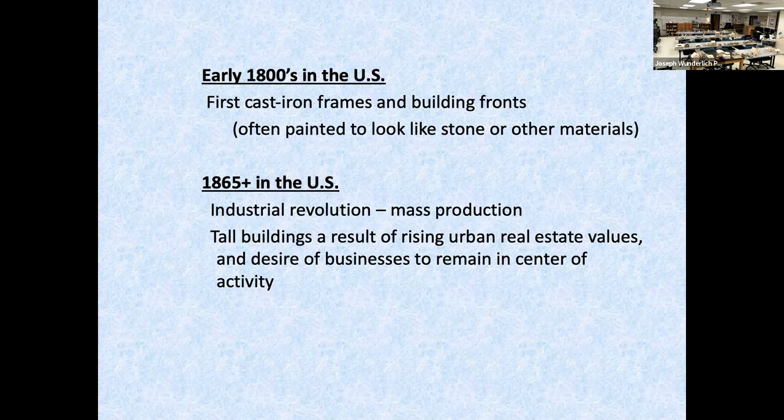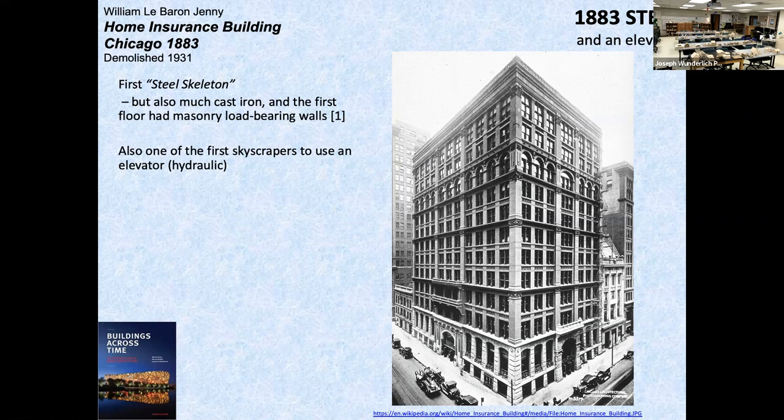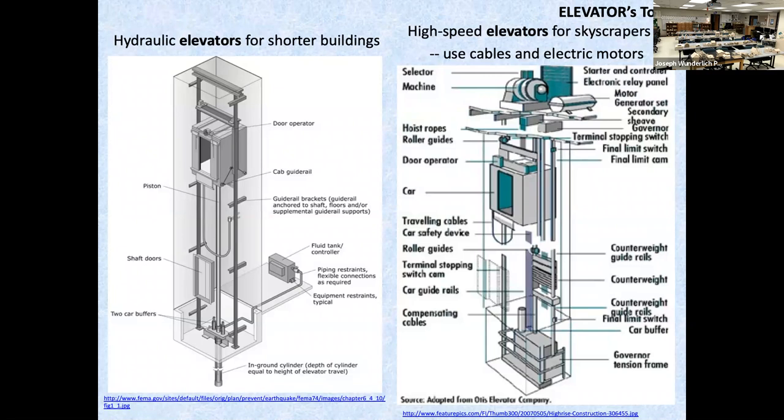Because of a rise in urban real estate values and the desire of business to remain in the center of activity, many downtown buildings resulted. The Home Insurance Building was the first steel skeleton — also much cast iron. The first floor had masonry load-bearing walls, still using masonry. And it was also one of the first skyscrapers to use elevators, which allowed high-rises to exist.